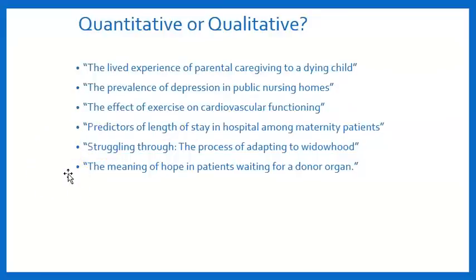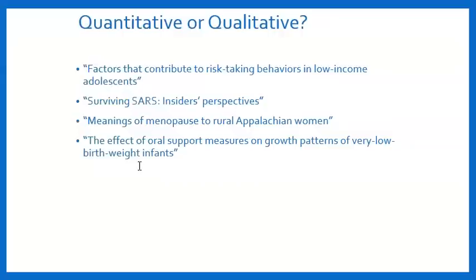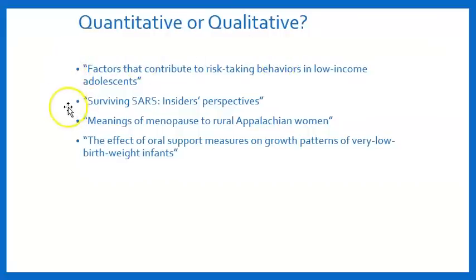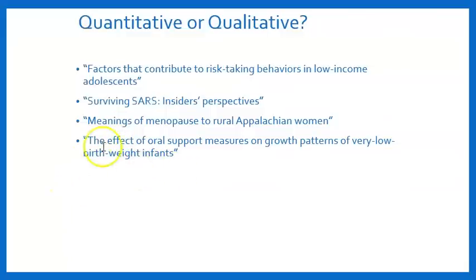'The meaning of hope in patients waiting for a donor organ' — if you see the word meaning, it's almost 100% qualitative; you can't understand meanings under a microscope with a small controlled study. 'Factors that contribute to risk-taking behaviors in low-income adolescents' looks for which variables are related to behaviors, so that's quantitative. 'Surviving SARS: insider's perspectives' — insider's perspectives tells you it's qualitative; you're hearing stories of what it was like to live with that condition. 'Meanings of menopause to rural Appalachian women' — that word meanings again, so qualitative. 'The effect of oral support measures on growth patterns of very low birth weight infants' — effect means quantitative.